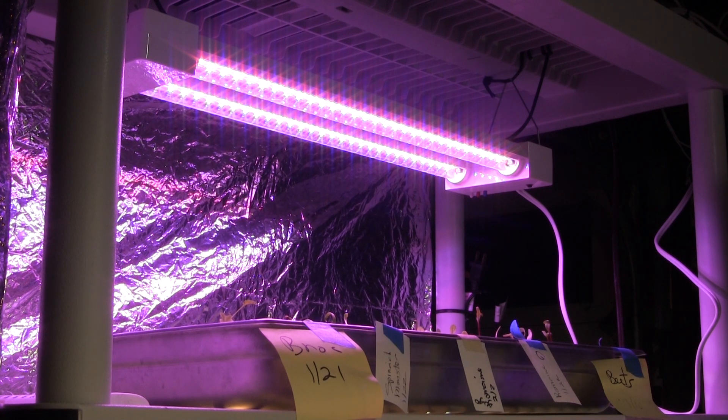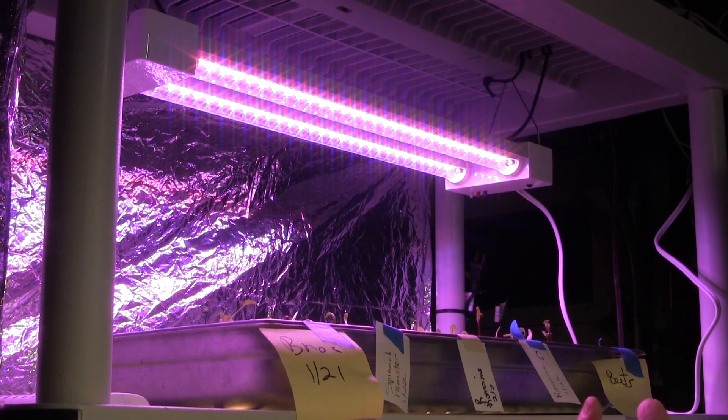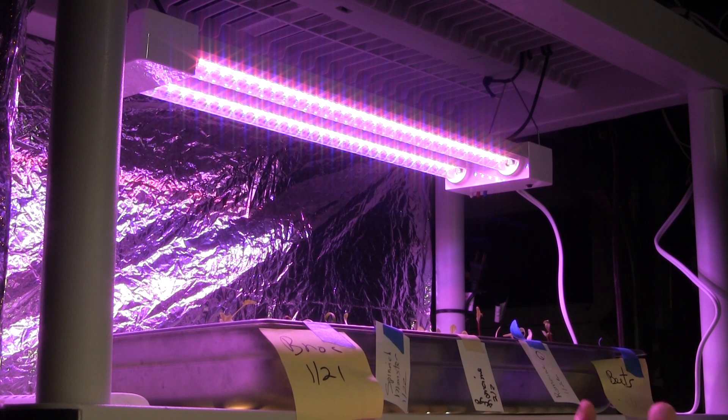because under less light, all those little chloroplasts will be lined up against the cell wall, facing the light like faces in a window, and they'll all be gathering as many photons as they can.